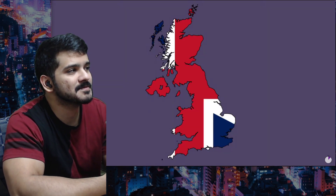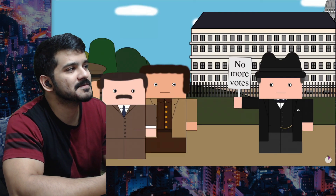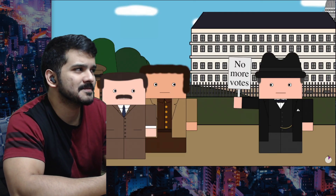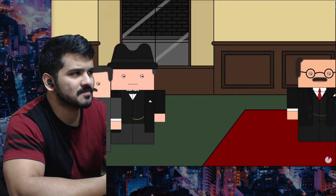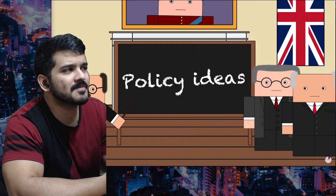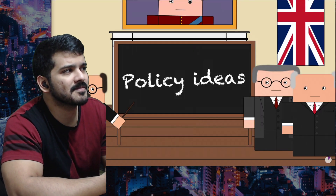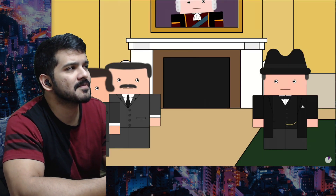When Germany surrendered in 1945, the British government was governed by both the Conservative and Labour parties, which had formed a coalition after elections were suspended in 1940 for the duration of the war. This suspension was to last until the threat to the British mainland was gone, and when it was, the Labour party withdrew from the coalition. Elections were scheduled for early July, and so both sides immediately started drawing up manifestos to put to the people.